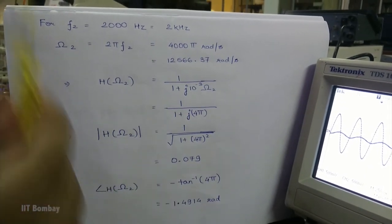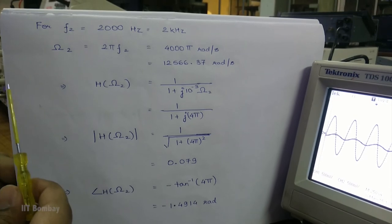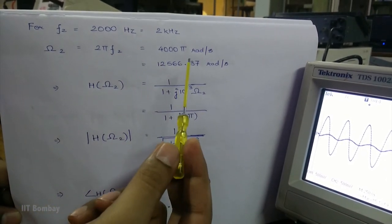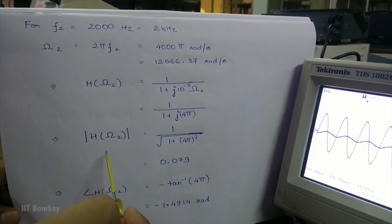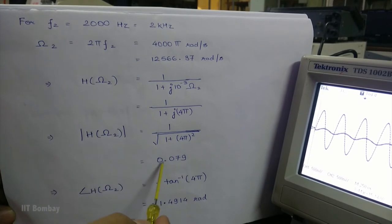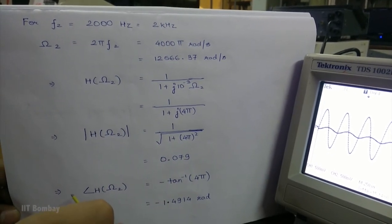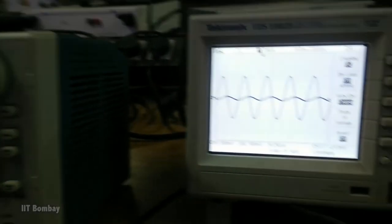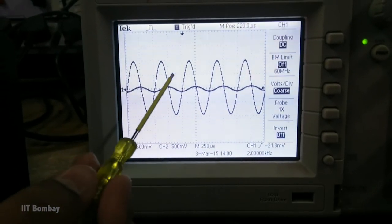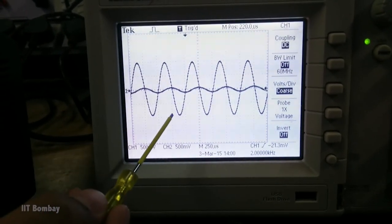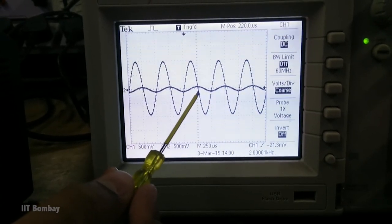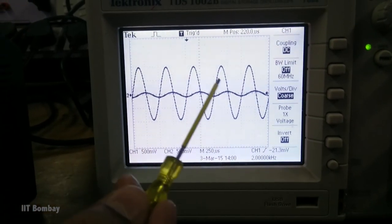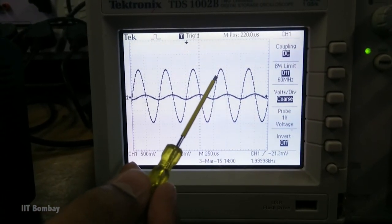Similarly, for the sinusoidal frequency of 2000 Hz or 2 kHz, we can find the angular frequency to be 4000π radians per second. Through this, we can find the amplitude of the transfer function to be 0.079 and the argument to be minus 1.4914 radians. Again, you can see the input waveform with the larger amplitude and the output waveform with the smaller amplitude, and the ratio of the amplitudes comes out to be roughly 0.081.